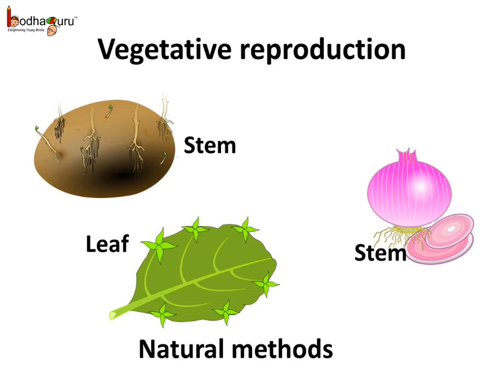As we saw, many plants — generally the seedless plants — use the vegetative method through their roots, stem, or leaf naturally to produce new plants. So these were the natural methods of vegetative reproduction.